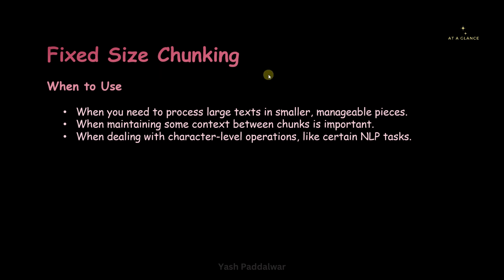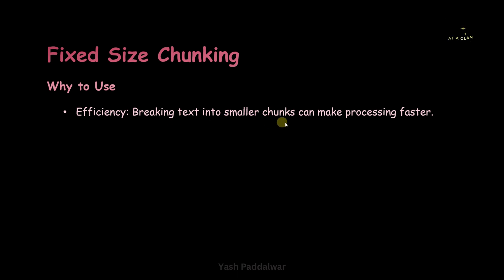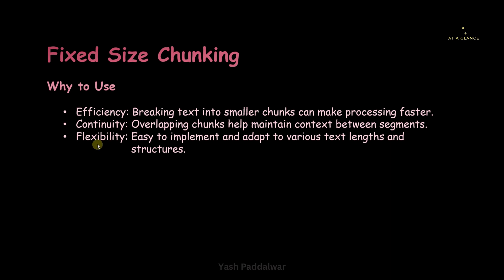Now let's see why to use the fixed size chunking strategy. The first reason is efficiency — breaking text into smaller chunks makes processing faster, as we've seen in detail in the previous video about providing large documents in the RAG pipeline. The next reason is continuity — overlapping the chunks helps maintain context between segments. The third reason is flexibility — fixed size chunking is the easiest to implement and adapts to various text lengths and structures, making it the most basic chunking strategy with which a lot of problems can be dealt.